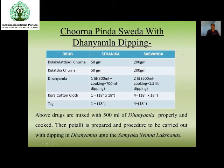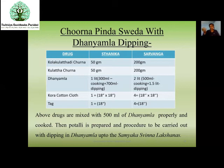For Churna Pinda Sveda with Dhanayamla dipping: depending on Stanika (local) or Sarvanga use — for Stanika (like one knee or elbow joint), 50 grams of Kulathadi Churna is enough. For Sarvanga, 200 grams Kulathadi Churna is used. Dhanayamla: 1 litre for Stanika, 2 litres for Sarvanga. Take a Kora cloth, make a Potali, and perform Svedana.